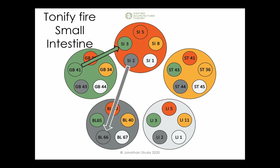In the four-needle five-element approach, we use the small intestine to bring in the idea of allowing them to connect to important things. The small intestine's function is separation — separating what is good, deep, useful, and important from what is superficial and less important. Placed in the emotional realm, this is about how to really connect on a deep level.